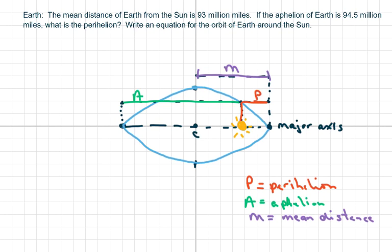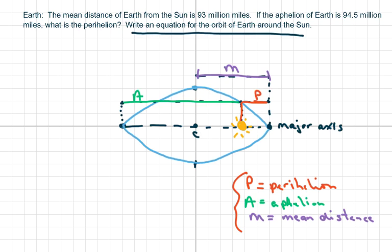Hi everyone, we're going to find the equation for the orbit of Earth around the Sun. The perihelion is the shortest distance from the Sun to the planet, and the aphelion is the longest distance from the planet — in this case, the Earth — to the Sun.